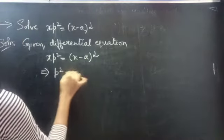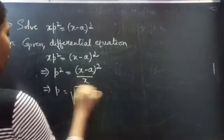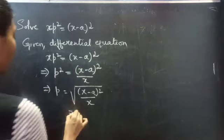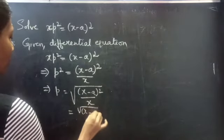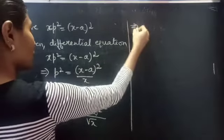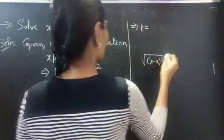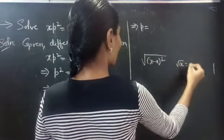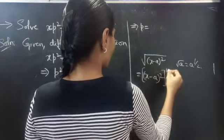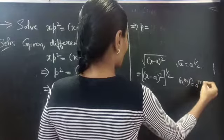Then, p² equals (x minus a) whole squared by x. Then, p equals the square root of (x minus a) whole squared by x. You can write this as square root of (x minus a) whole squared by square root of x. Since we know that square root of a equals a power 1 by 2, you can write this as (x minus a) whole squared power 1 by 2.